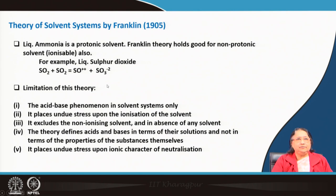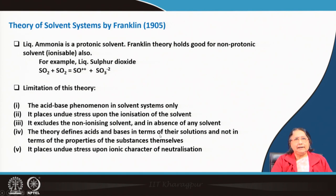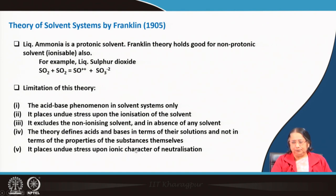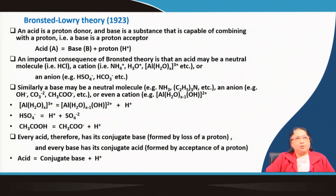The limitations of Franklin's theory are that the acid-base phenomena are explained only in solvent systems, similar to the Arrhenius concept. It places undue stress upon the ionization of solvent, excludes non-ionizing solvents, and in the absence of any solvent — for example, in the gaseous phase — it could not explain the properties of acids and bases. The theory defines acids and bases in terms of their solutions, not in terms of the properties of the substances themselves, and it places undue stress upon the ionic character of neutralization.